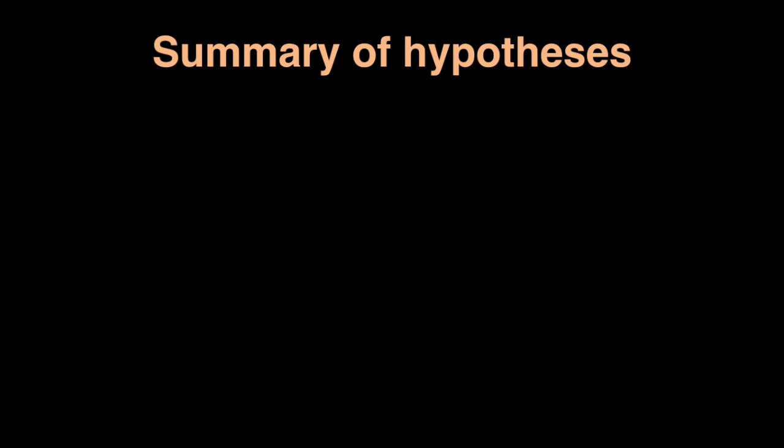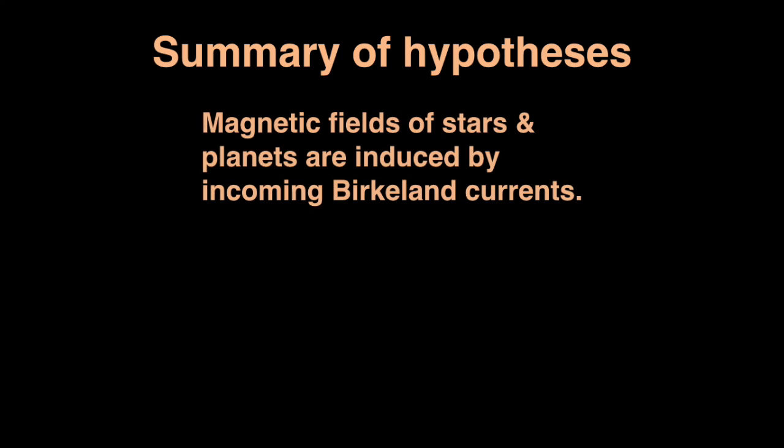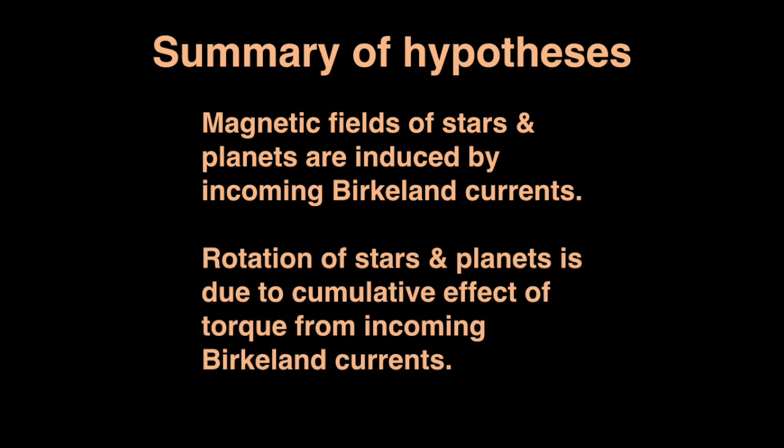So basically what I'm saying is that stars and planets act as electromagnets and as electric motors. So summarizing the hypotheses: first hypothesis, magnetic fields of stars and planets are induced by the incoming Birkeland currents. The second hypothesis, rotation of stars and planets is due to cumulative effect of torque from incoming Birkeland currents. So that's the story.